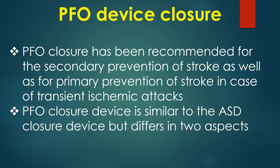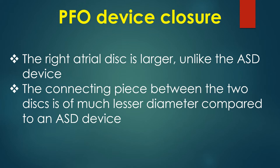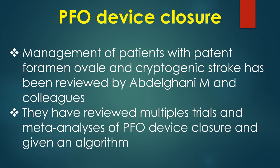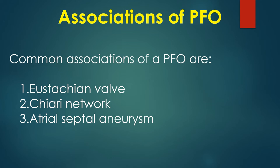PFO closure has been recommended for secondary prevention of stroke as well as primary prevention in cases of transient ischemic attacks. The PFO closure device is similar to the ASD closure device but differs in two aspects: the right atrial disc is larger, and the connecting piece between the two discs is of much lesser diameter. Device delivery technique is similar to ASD device closure, done under fluoroscopy in the cath lab with guidance by transesophageal echocardiography. Management of patients with patent foramen ovale and cryptogenic stroke has been reviewed by Abdelghani and colleagues, who reviewed multiple trials and meta-analyses and provided an algorithm. Common associations of a PFO are eustachian valve, Chiari network, and atrial septal aneurysm.